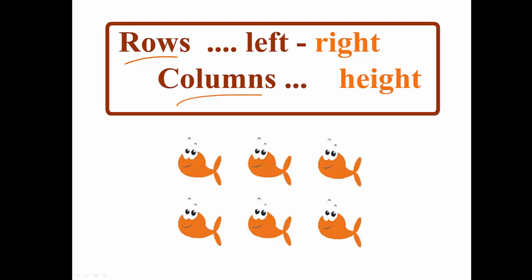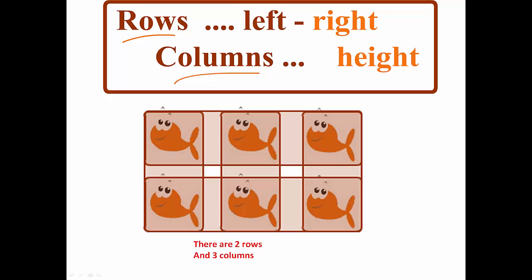To remember this, you can think of the mnemonic rows left to right, columns height, as rows run across the grid and columns up and down the grid. And if you apply this terminology to the fish we have here, we could say that there are two rows and three columns of them, that all together make a special grid just like the one we use on our Penji maps.